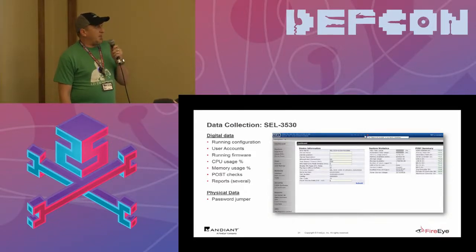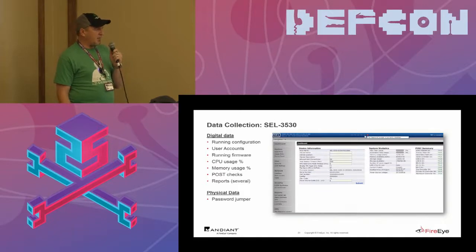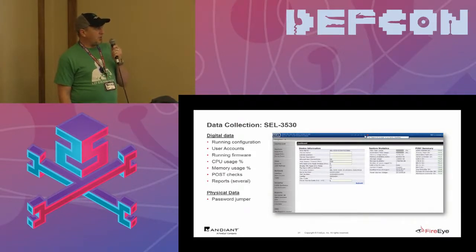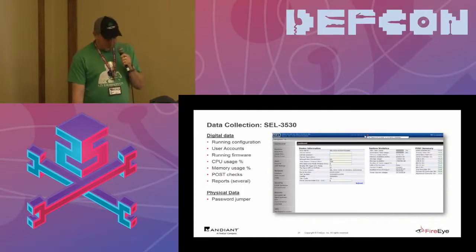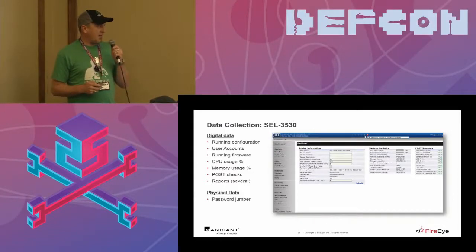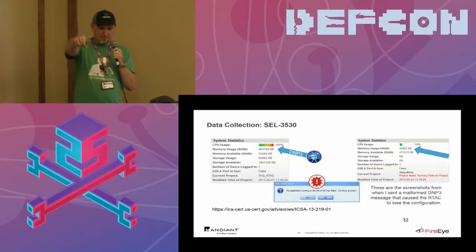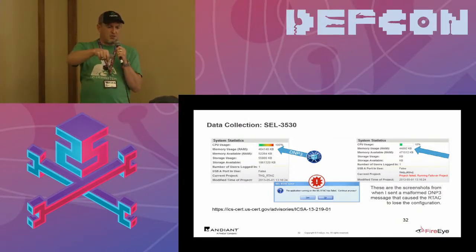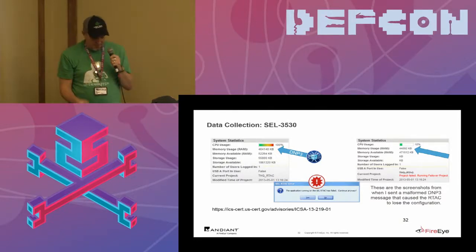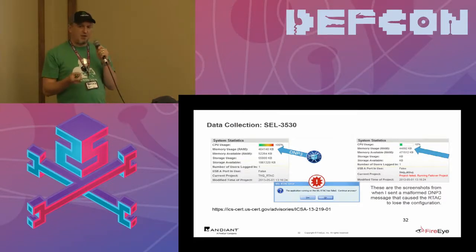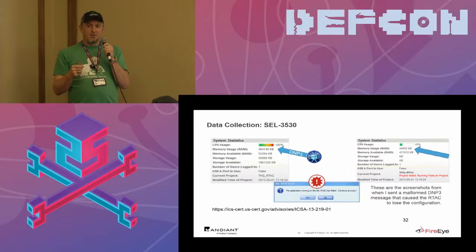Now let's go to the Schweitzer RTAC. We wanted to cover a Linux embedded device. This one doesn't give us any of the shells like VXworks does — they protected the command line. But it runs on a PowerPC, has a gigabyte of RAM, and runs embedded Linux. You can use a web browser and SSH terminal. For data collection: the running configuration, user accounts, running firmware — all visible on the web interface when you log in. For physical data, there's a password jumper inside the relay for emergency reset — if an attacker was physically there, they could use that password jumper to get into your system, making it a physical security problem.